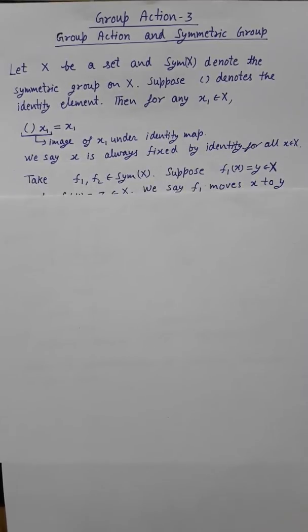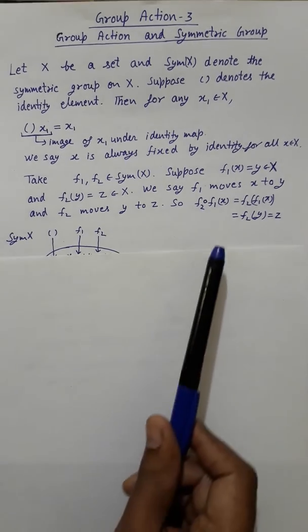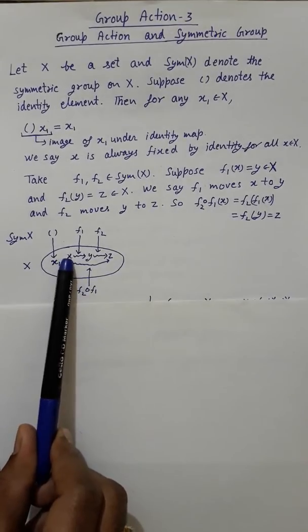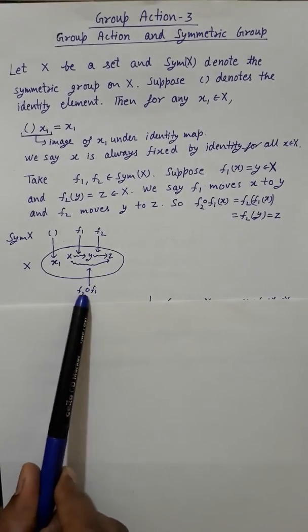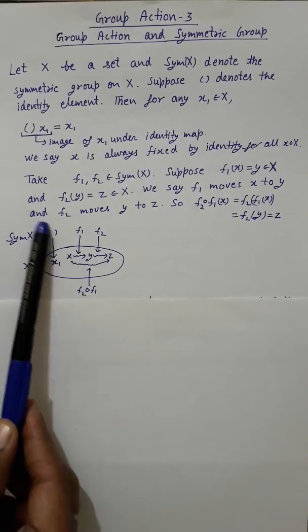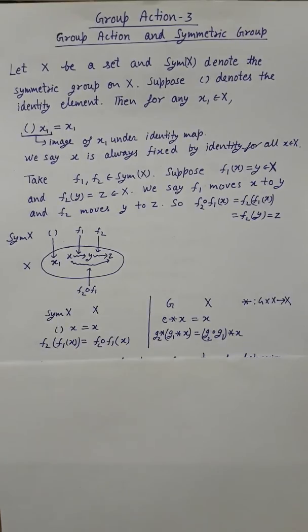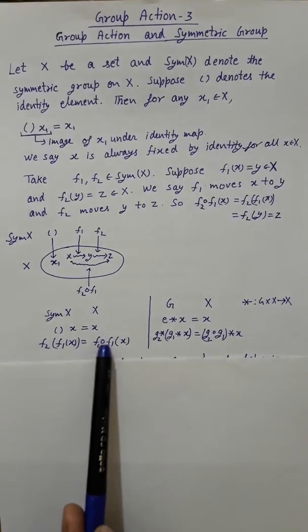Take two elements f1 and f2 in Sym(X). If f1 maps x to y and f2 maps y to z, then operating f1 followed by f2 on x moves x to z. More formally: the identity operating on x gives x, and f2 operating on f1(x) is the same as f1 composed with f2 operating on x.